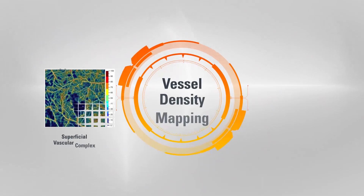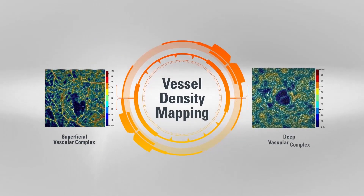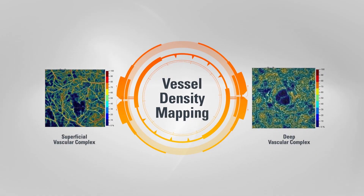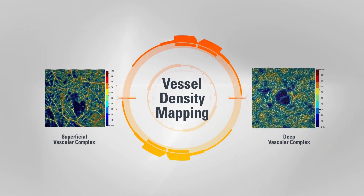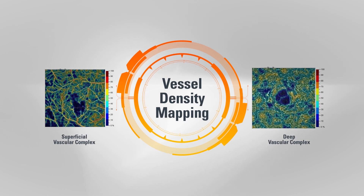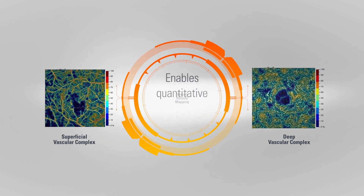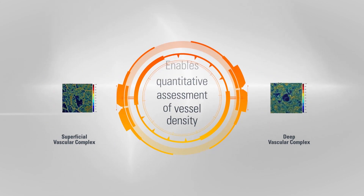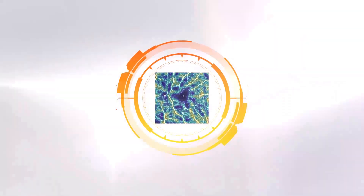Vessel density mapping provides a color-coded map of the superficial and deep plexi vasculature to enable quantitative assessment of vessel density and changes over time.